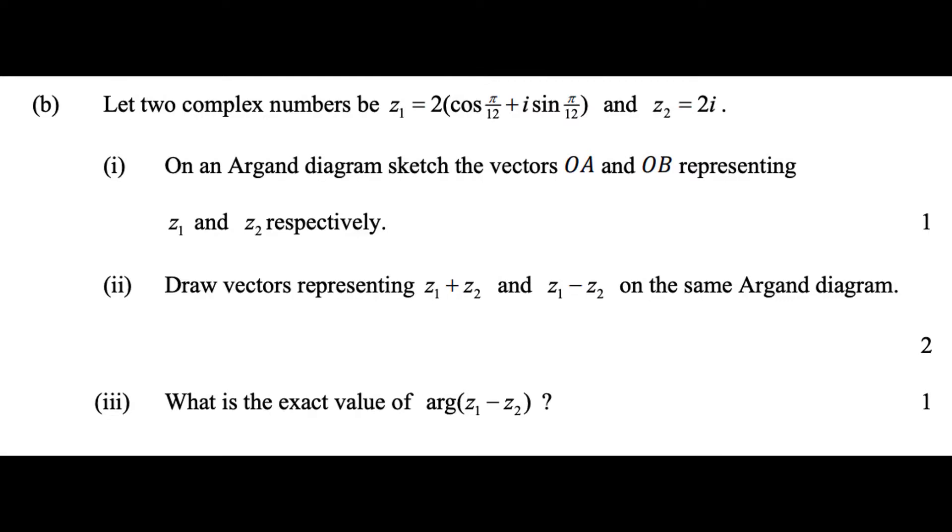In this video, I'll be answering this question here, which tells us to let two complex numbers be z1 equals 2 cos pi on 12 plus i sine pi on 12, and z2 equals 2i.